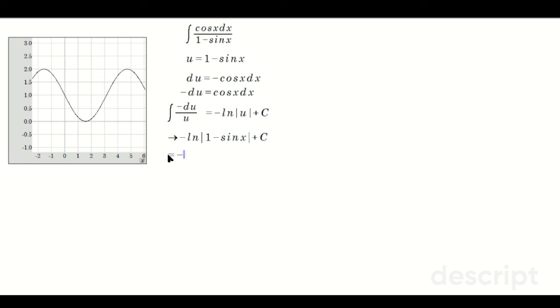So we can just write negative ln of 1 minus sine x plus C. You don't need the absolute value bars.